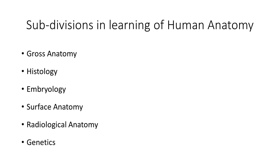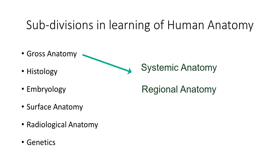Gross anatomy is the naked-eye observation of cadavers — it is macroscopic anatomy. It can be learned in a systemic or regional way. In the systemic approach, systems such as the cardiovascular system, central nervous system, respiratory system, digestive system, and musculoskeletal system are dealt with in order.